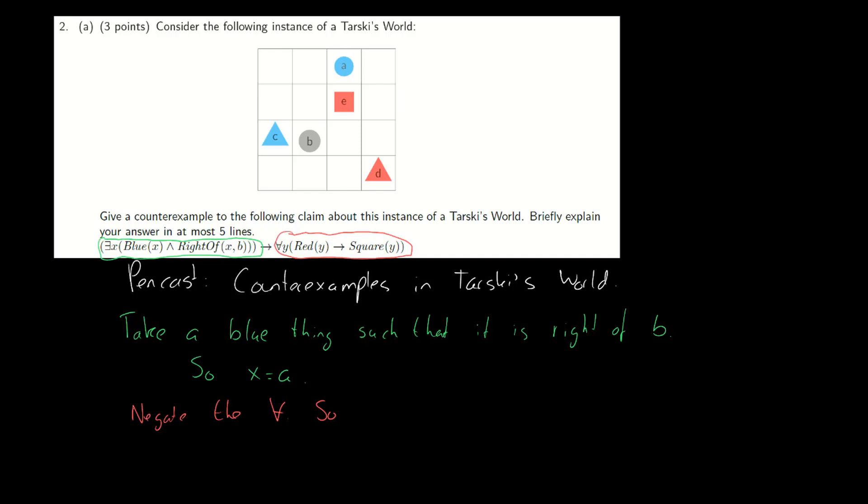In other words we need to find something that is red and not a square. Fortunately there is such a thing, it's D.